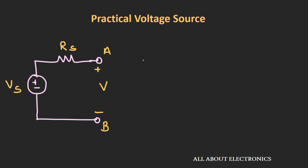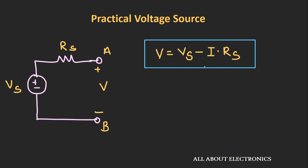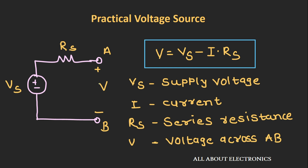In any practical voltage source, the amount of current that can be drawn is limited. Practical voltage sources available in the market define a current rating, and the maximum current that can be drawn depends upon that rating. Apart from that, a practical voltage source has a series internal resistance Rs. The voltage appearing across its two terminals can be given as Vs minus I times Rs, where Vs is the supply voltage, Rs is the series internal resistance, and I is the current drawn through the source.